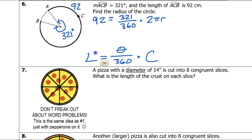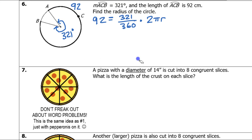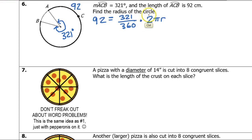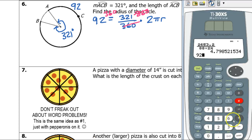So I'm just substituting everything I know into the formula. We're supposed to find the radius, so I'm just solving for r. What I can do is multiply both sides by 360 — multiply by 360 over here and multiply by 360 over here — that way the 360s cancel each other out. And then I have 92 times 360, which is 33,120.